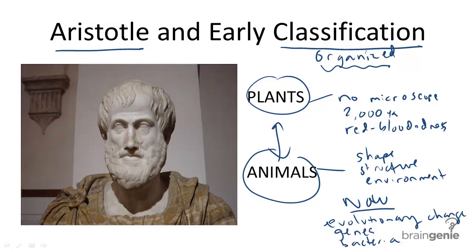But many others, including a Swedish botanist, came along to develop a system of organization in the 1700s called taxonomy that would serve as the foundation for our current system of classification.